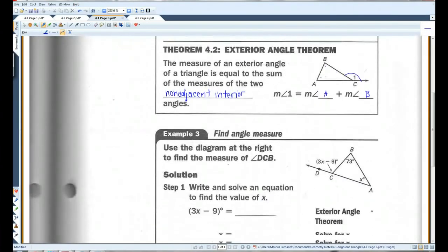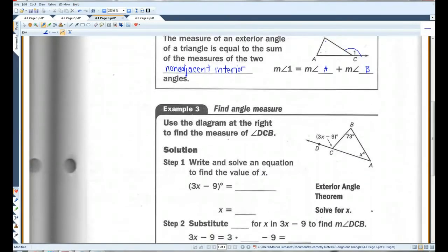All right. Find angle measure. Use the diagram at the right to find the measure of angle DCB. Okay. Now, as you know, as we just learned, this angle is equal to the sum of the two non-adjacent interior angles. So, if I add these two angles together, I'm going to get this angle here. So, 3x minus 9 equals 73 plus x.